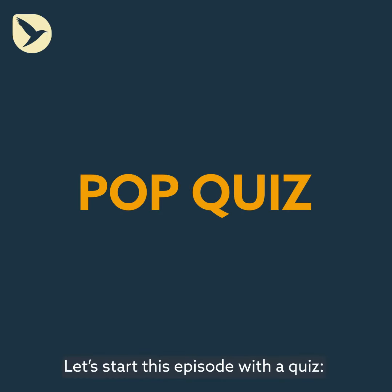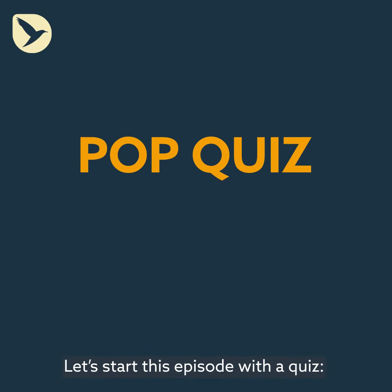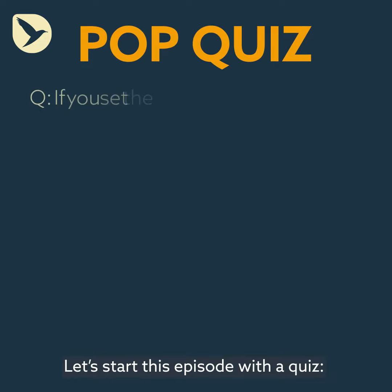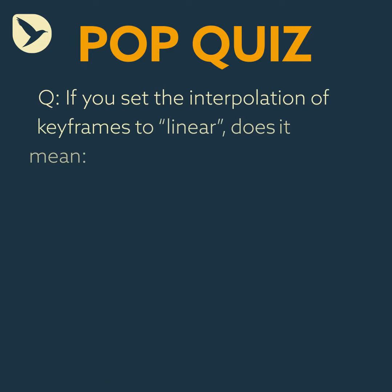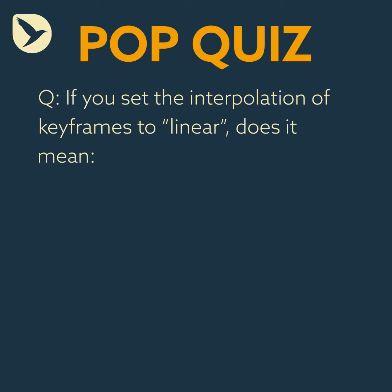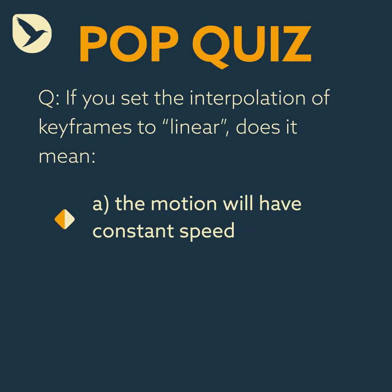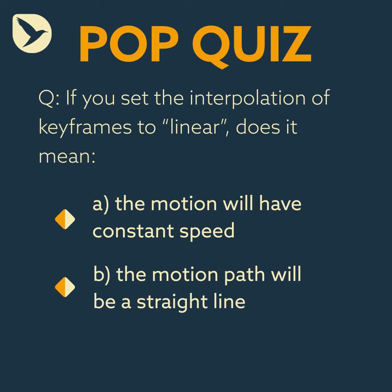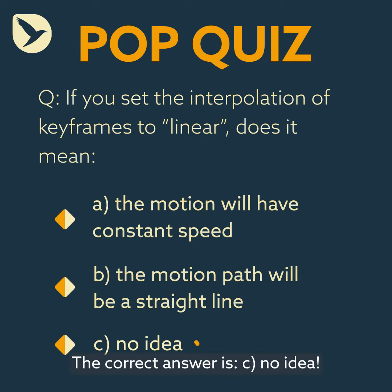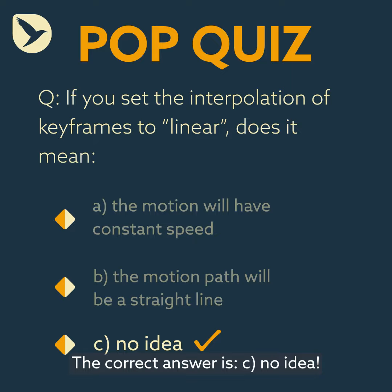Let's start this episode with a quiz. If you set the interpolation of keyframes to linear, does it mean A: the motion will have constant speed, B: the motion path will be a straight line, or C: no idea? The correct answer is C — no idea.